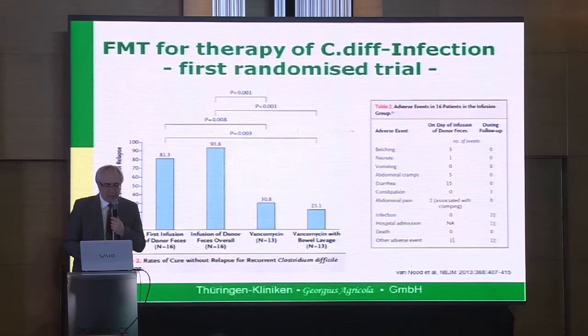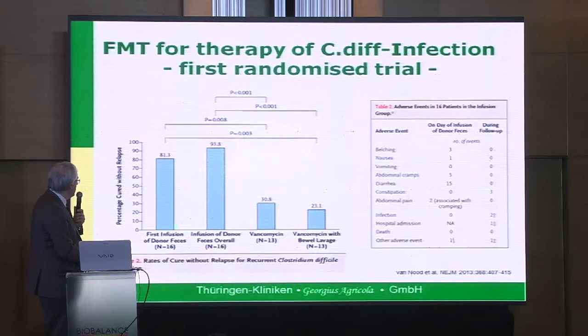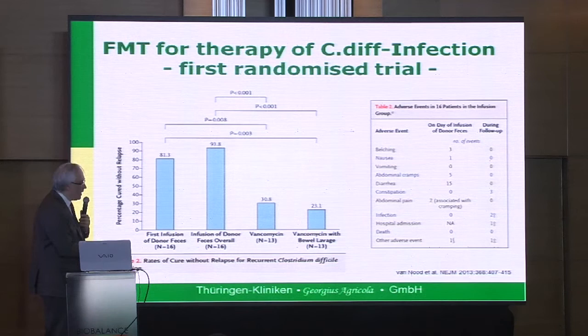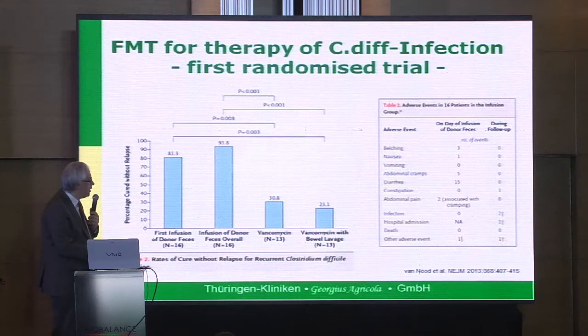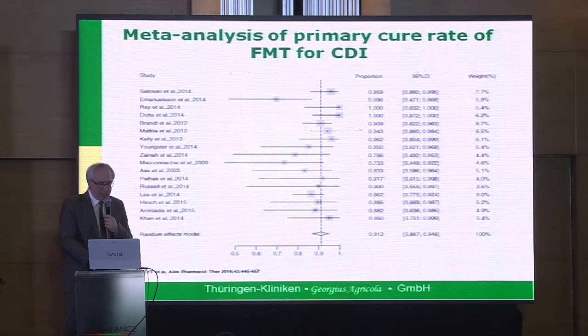Concerning Clostridium difficile infection and FMT, the method is very good. In the work by Van Noot, the method was used in 16 patients with CDI. After the first infusion, there was more than 80% healing rate. Some patients needed more than one infusion and the healing rate was 93%. Compared to antibiotics like vancomycin or vancomycin-barolavage, it was only 30%. We now have meta-analyses and we know it works — the cure rate is about 90%.